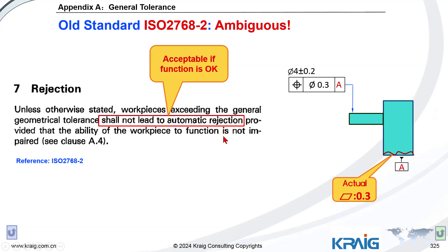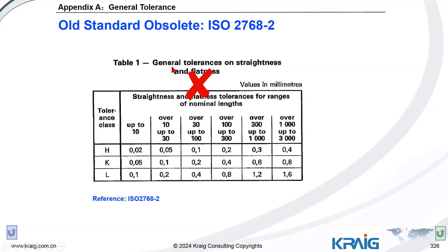But wait — what does 'function is okay' mean? Function is not decided by a single component; it's decided by multiple components assembled together. We cannot judge function based on a single component alone. So there's no way to judge this component based on function, and even if the function is not okay, how can we say it's the fault of this component and not another? Logically, it makes no sense to use this table.